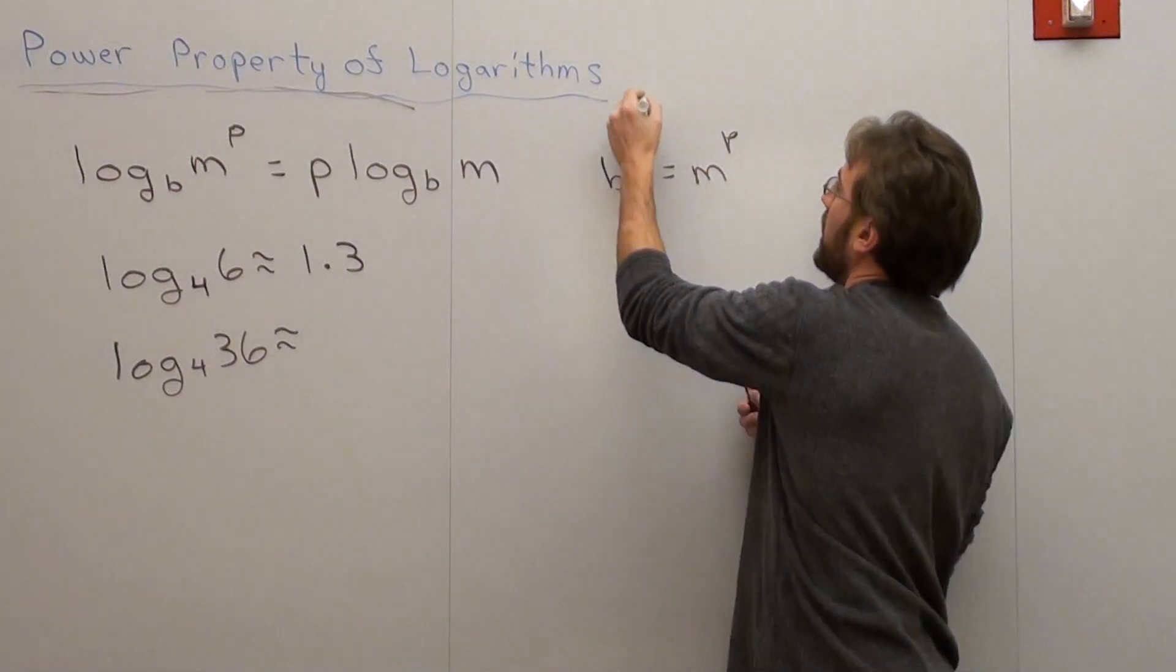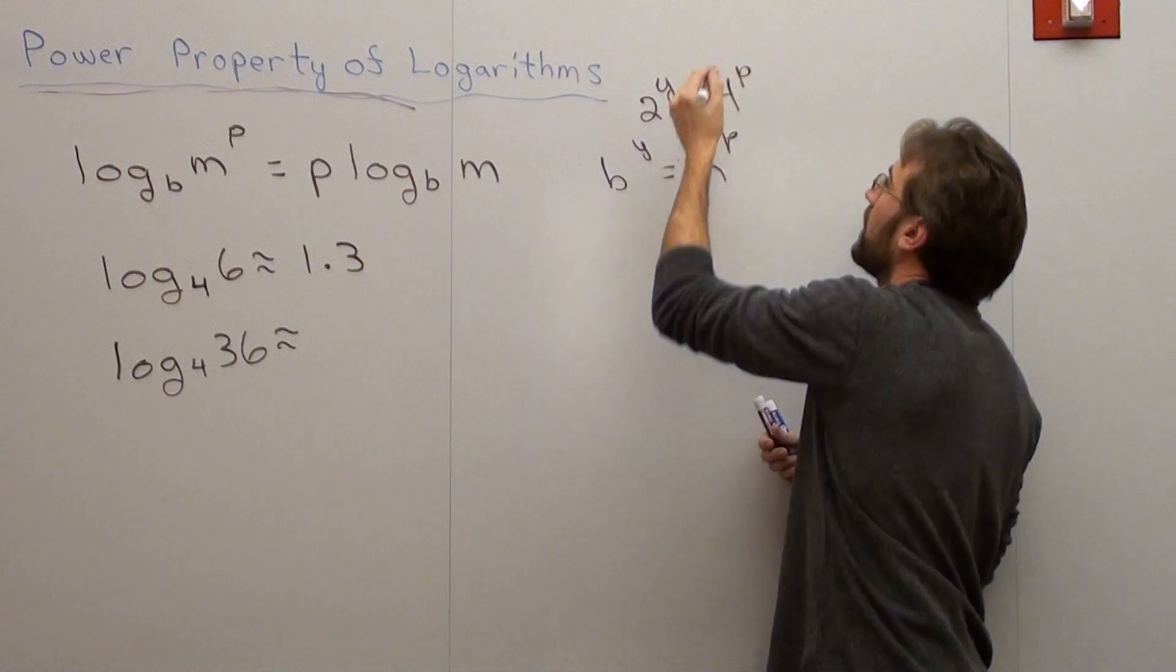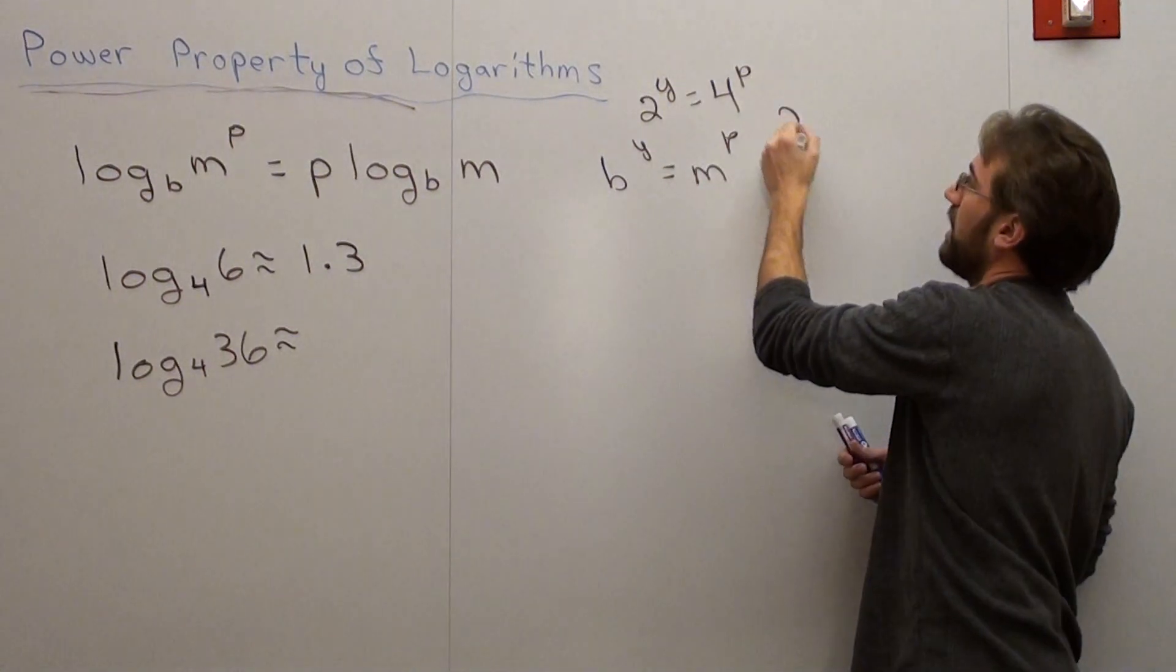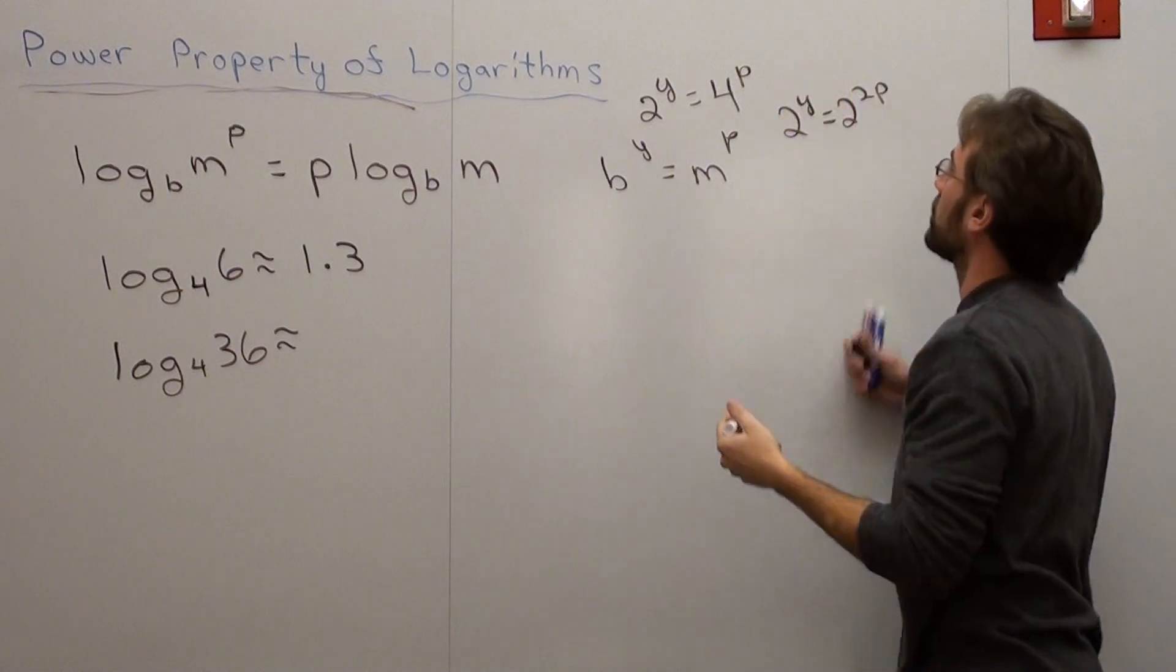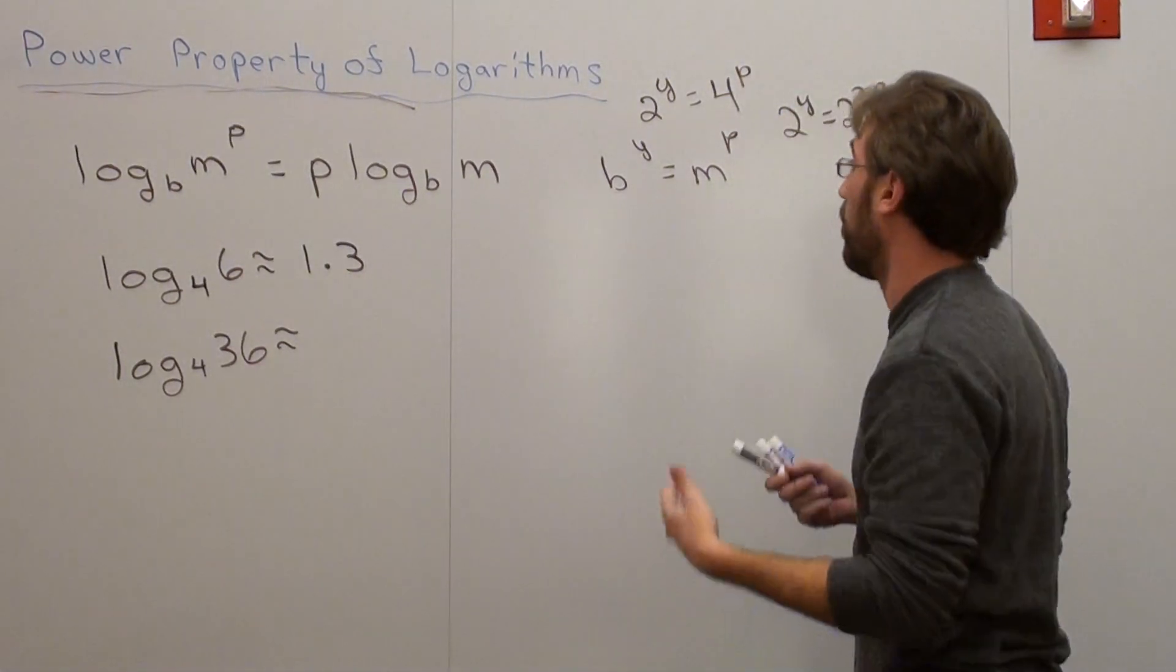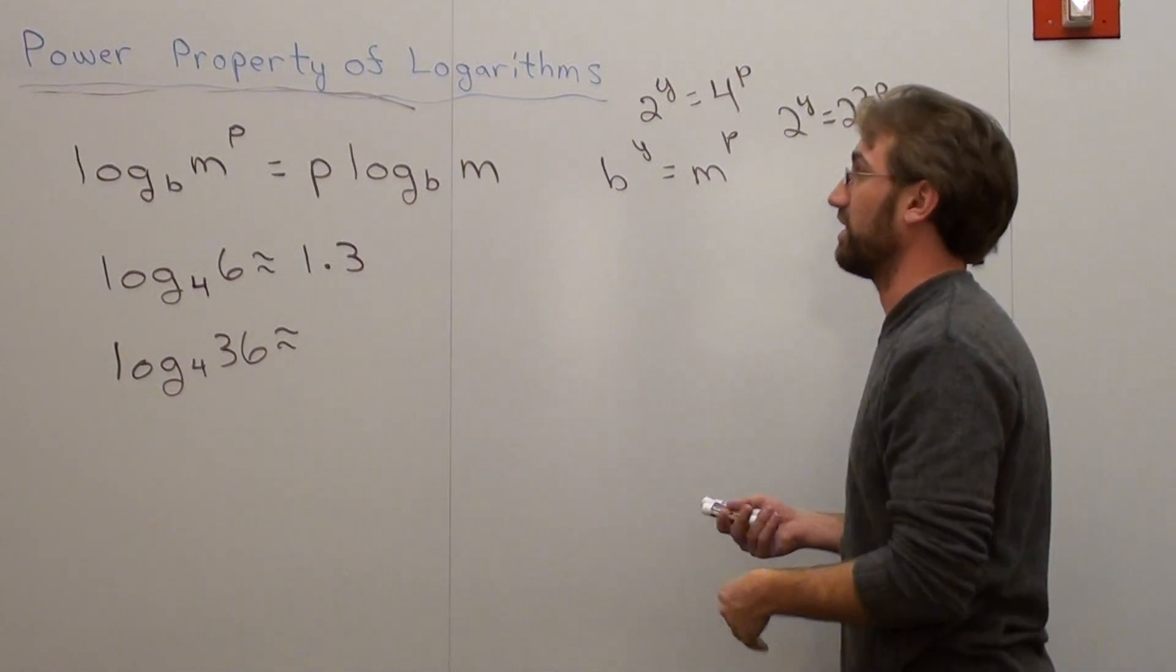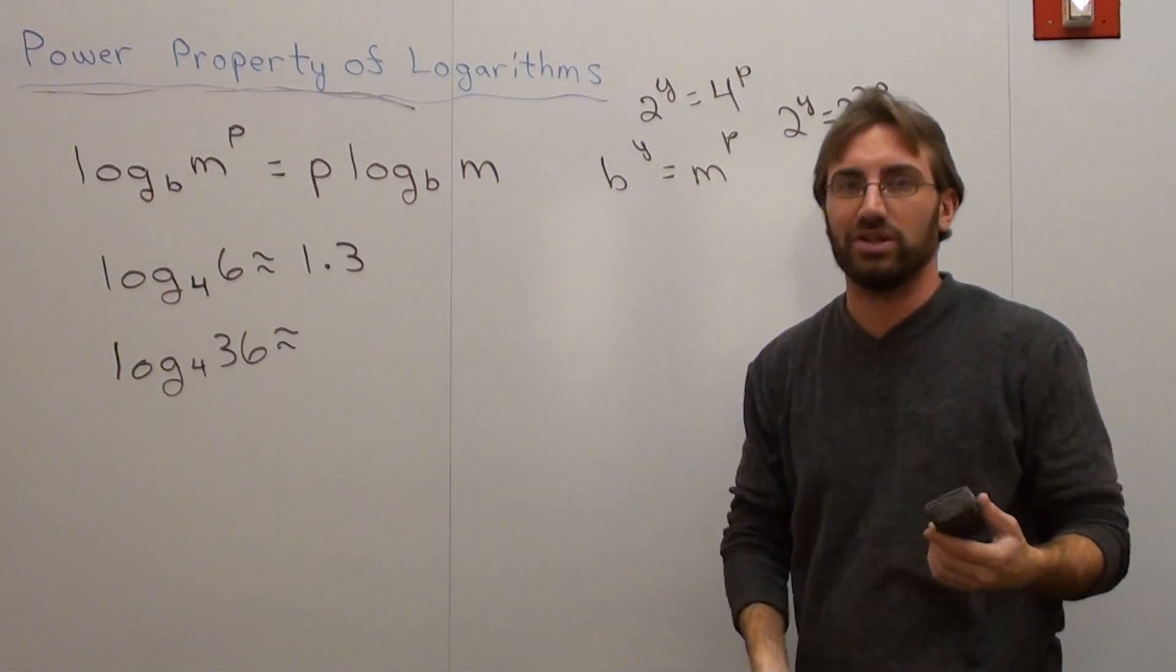But with that said, let's say this is a 2 to the y, and this is a 4 to the p. Basically what you do is you say, okay, that's a 2 to the y, and that's 2 to the 2p, and so all it becomes is like a multiplier in front of the actual logarithm. I hope that actually makes sense.